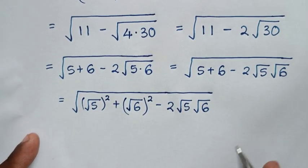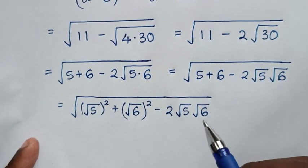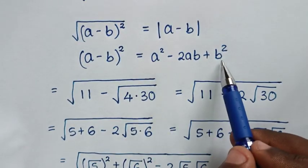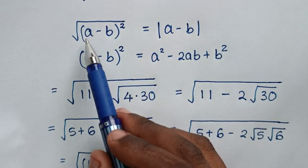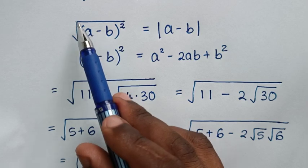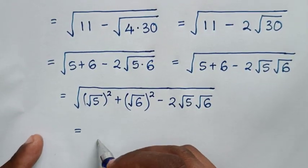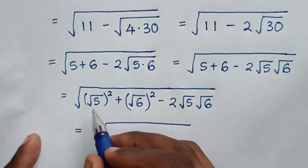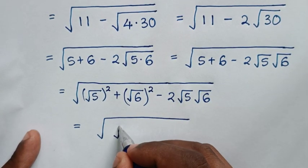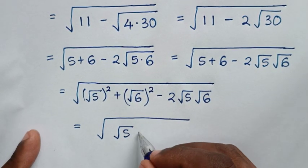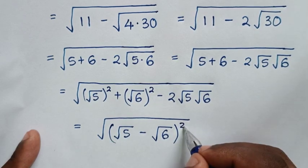The expression under the square root is now in the form (a - b)², so we can write it as √(√5 - √6)², which equals the absolute value |√5 - √6|.